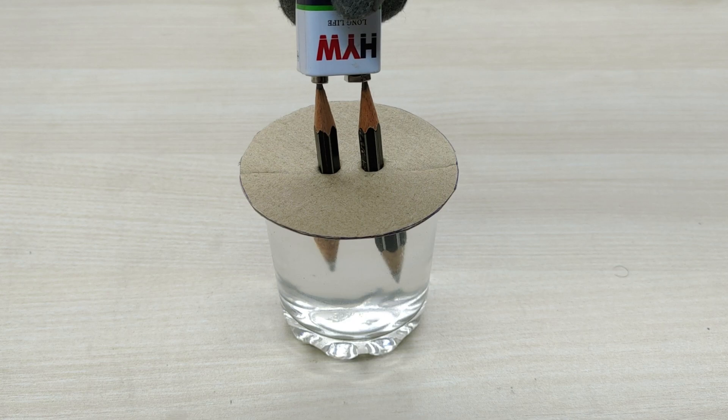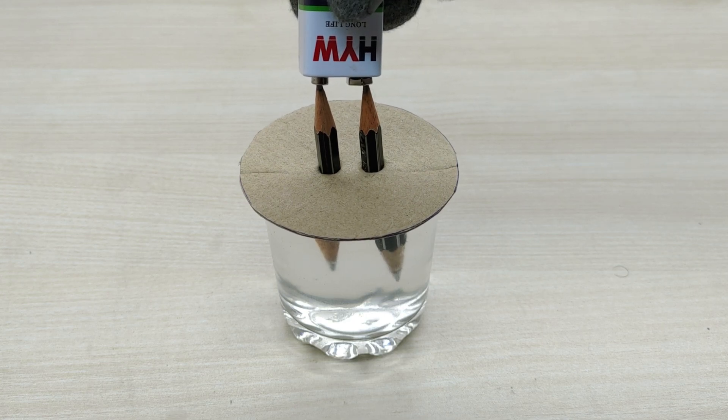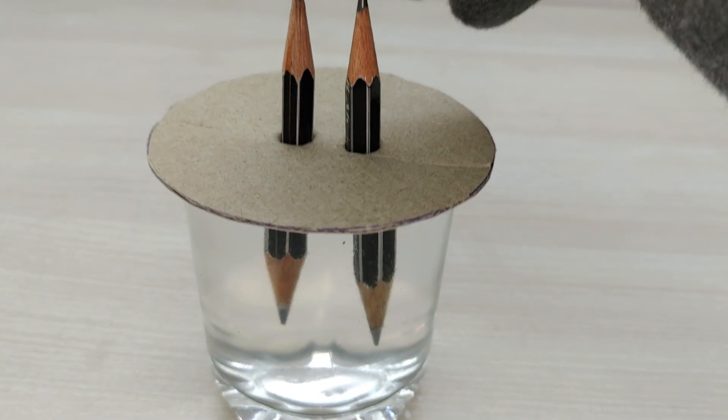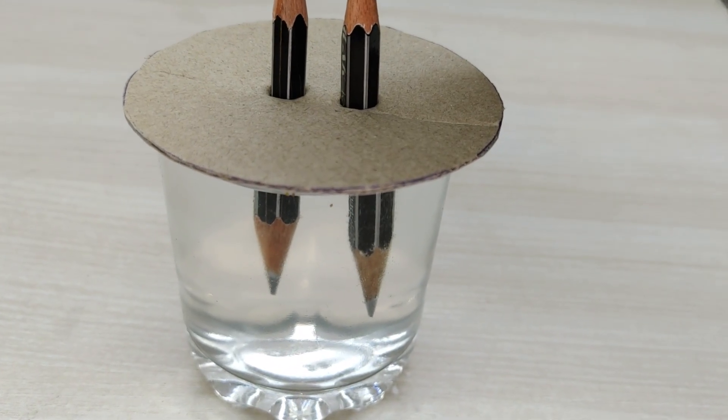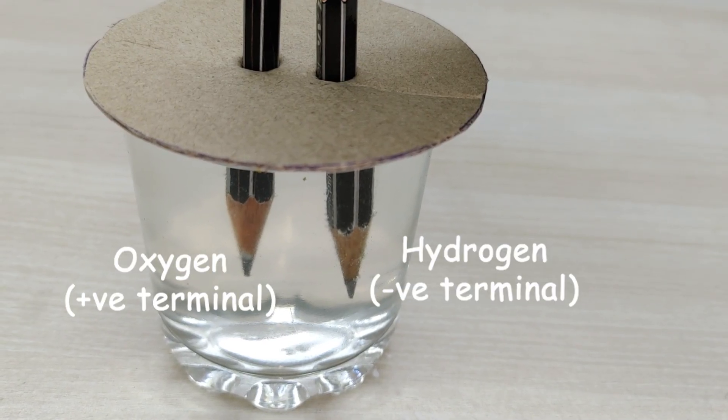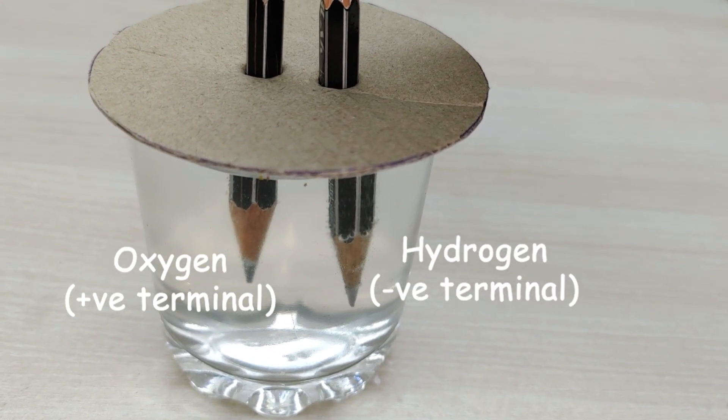We can see that the electrolysis of water is happening. Hydrogen gas is getting generated at the negative terminal and oxygen gas at the positive terminal.